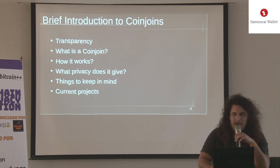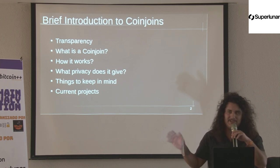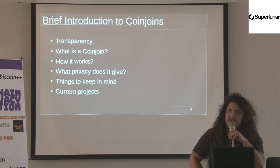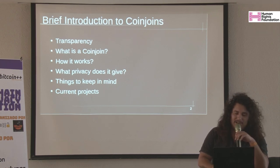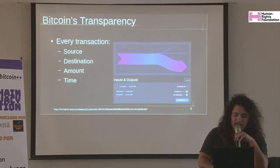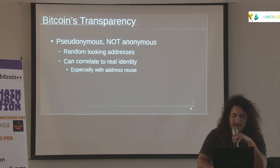I think most of us in this room probably know what a CoinJoin is. I may just go really fast on that aspect. Bitcoin is very transparent as it is — source, destination, amount, time. That's all visible on-chain. And it's pseudonymous, not anonymous.